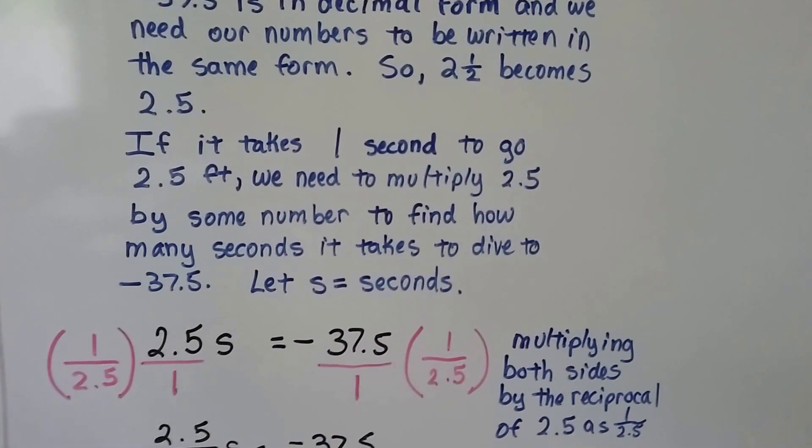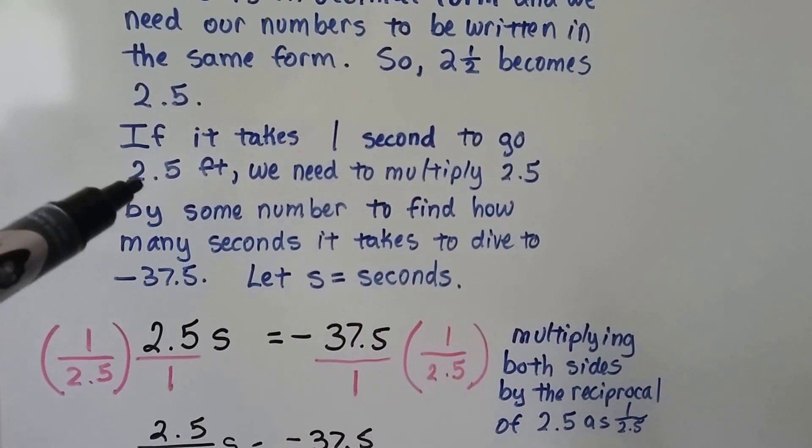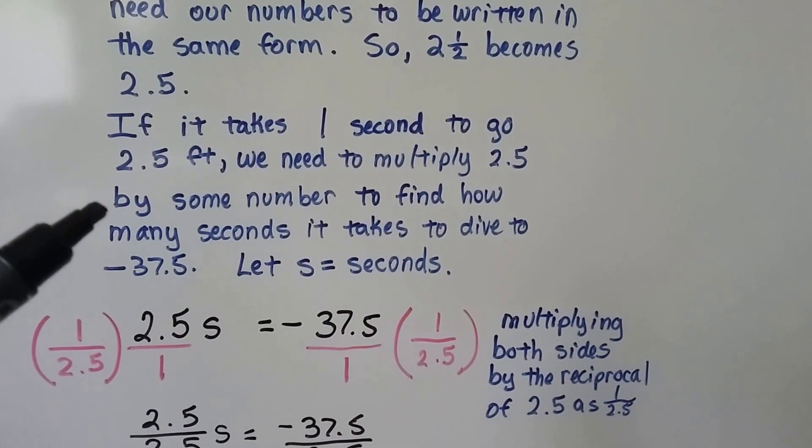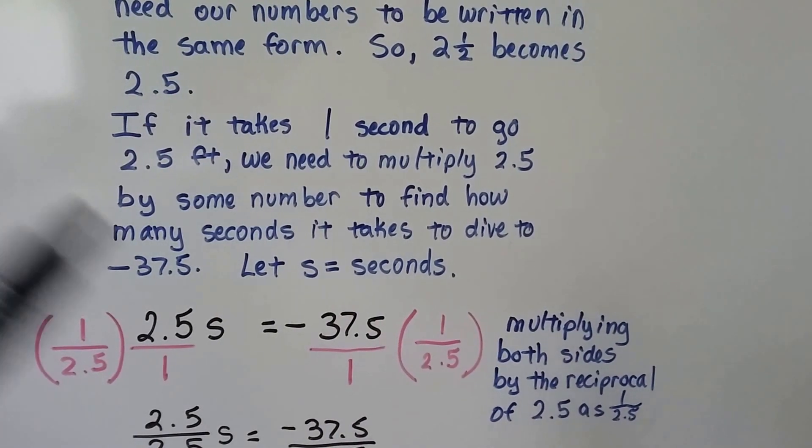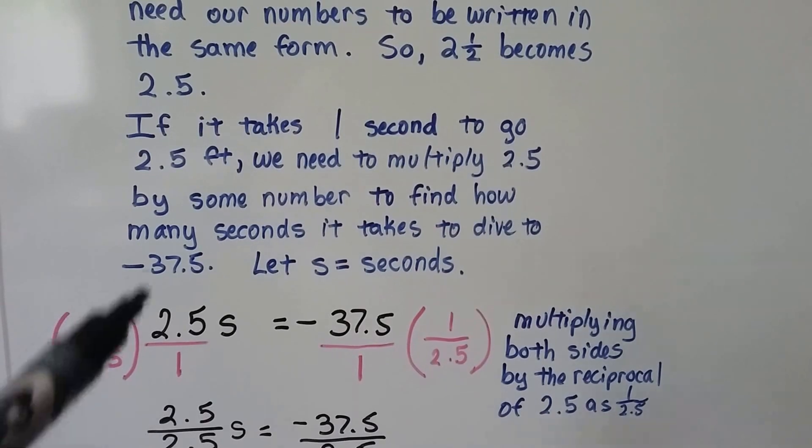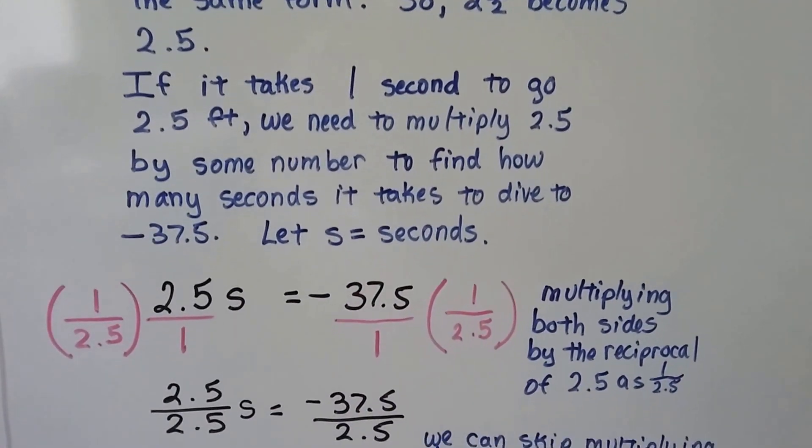Well, if it takes one second to go 2.5 feet, we need to multiply 2.5 by some number, n or x or s, to find how many seconds it takes to dive that negative 37.5.